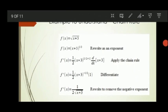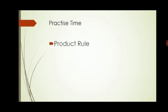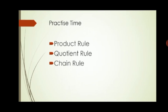As one more chain rule example, f(x) = √(x + 3) is rewritten as (x + 3)^(1/2). Applying the power rule with the chain rule, the derivative of (x + 3) is 1, so we easily get the answer 1 / (2√(x + 3)). To understand these rules clearly, we need to practice by applying the product rule, quotient rule, and chain rule to many questions. Thank you everyone, and we will proceed with the next concept in the next video.